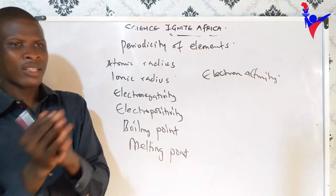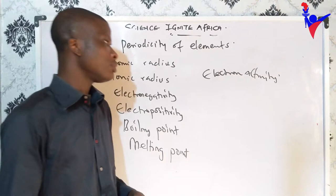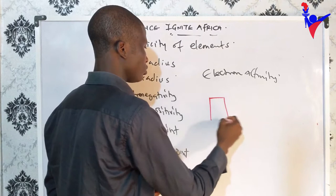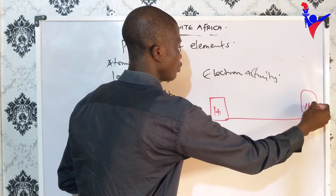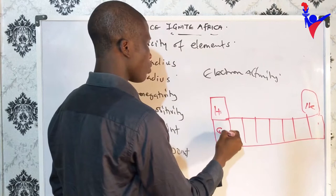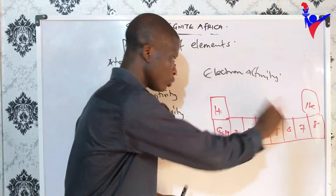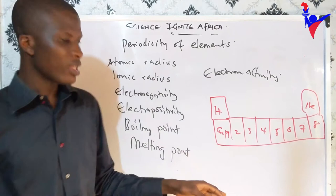In the periodic table, elements are placed in groups and periods. You have group one, group two, and likewise the halogens and noble gases. The elements are arranged in rows — periods one, two, three, and so on — and columns called groups. Elements in group one are called alkali metals, and group two are alkaline earth metals.